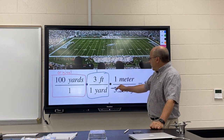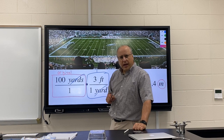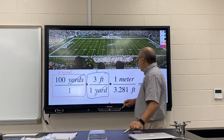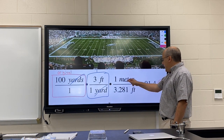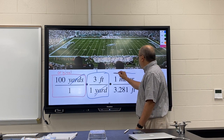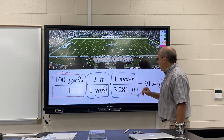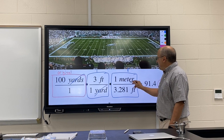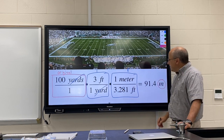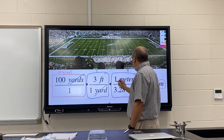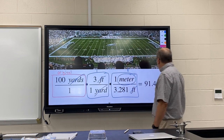Why are yards on the bottom? Because we want to cancel with the yards on top. Then we want to turn it from feet into meters, so we multiply by another fraction equal to one, because one meter is equivalent to 3.281 feet. The feet cancel and we're left with just meters.